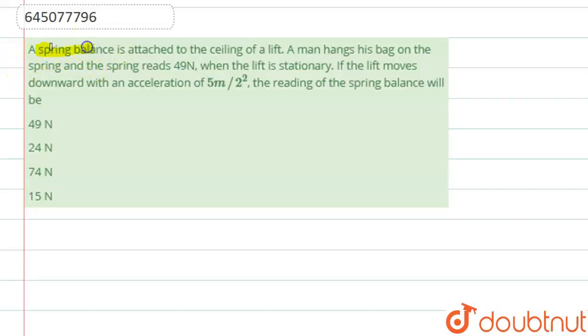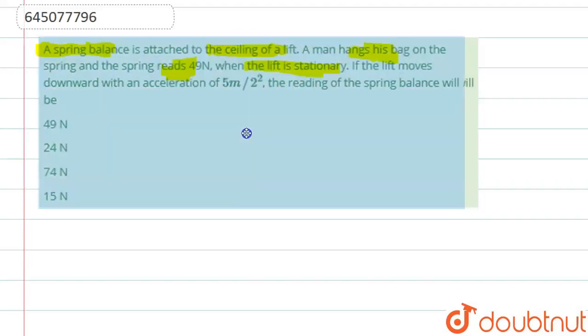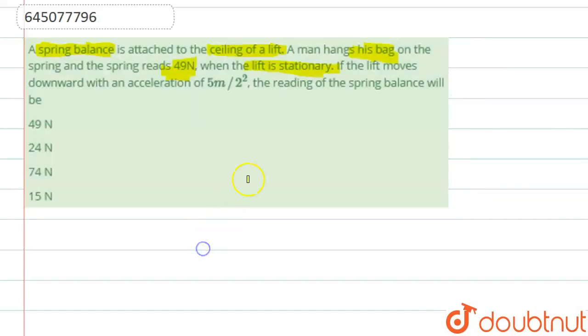The question says that a spring balance is attached to the ceiling of a lift. A man hangs his bag on the spring balance and it reads 49 Newtons when the lift is stationary. The lift moves downward with an acceleration of 5 meters per second squared. The reading in the spring balance will be?